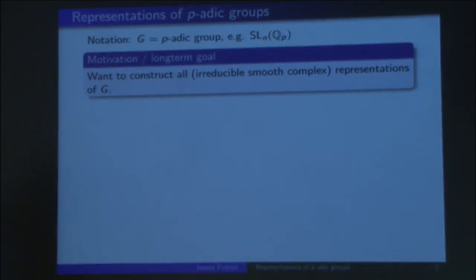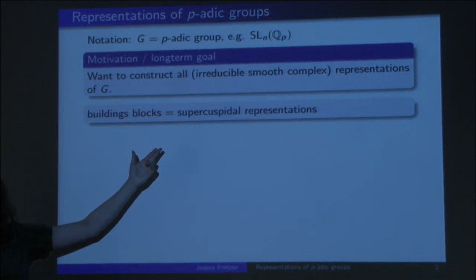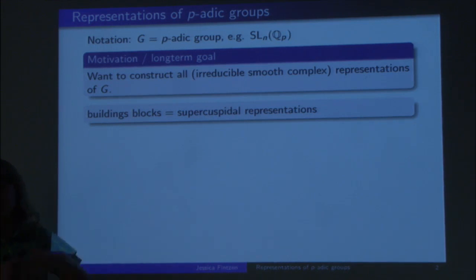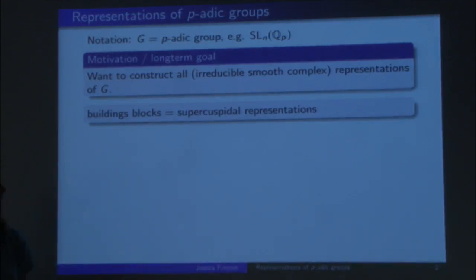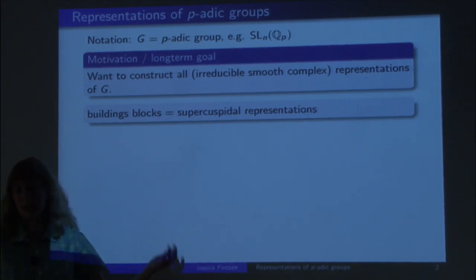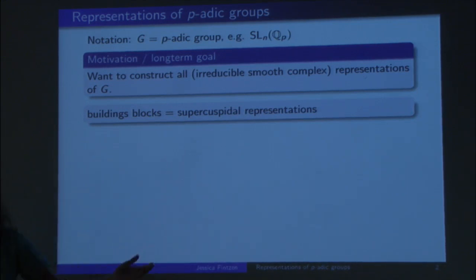How do we do this? We know there are certain building blocks called supercuspidal representations. If you ever hear the term supercuspidal representations, you shouldn't be scared — it just literally means building blocks for these representations. All the others can be built out of these supercuspidals by something well known called parabolic induction. The supercuspidal ones are those that do not appear in any non-trivial parabolic induction.